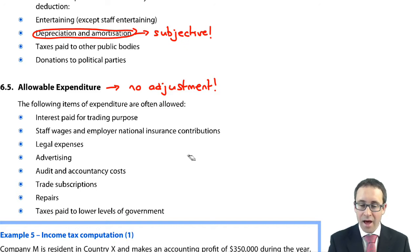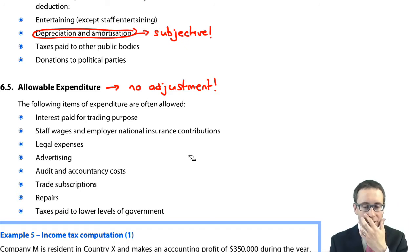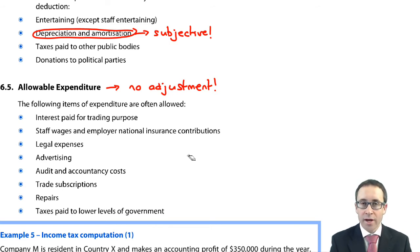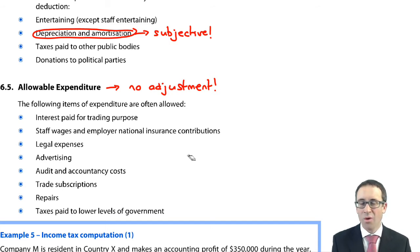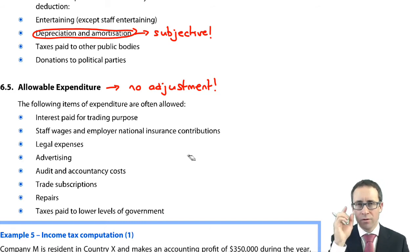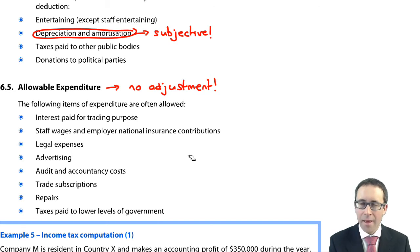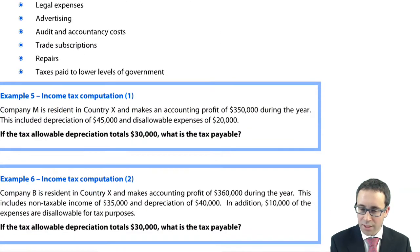Allowable items include interest paid (as long as it's for trading purposes, not investment), staff wages, legal expenses, advertising, audit fees, trade subscriptions, and repairs. There is also a mention of tax paid to lower levels of government, but that gets too complex and too specific to individual jurisdictions, so don't worry about it.